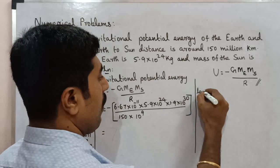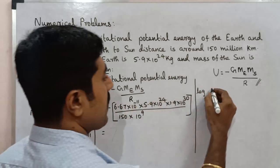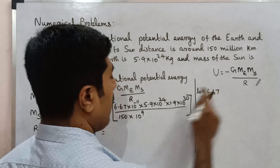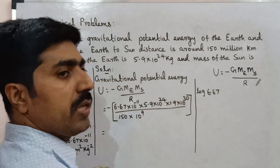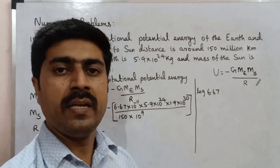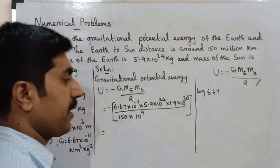So in this step we use the log method. First, take log of 6.67. When there is multiplication, take the log and add. When there is division, subtract the log.